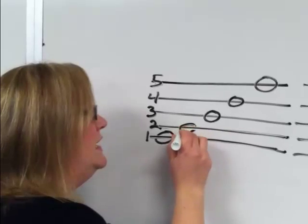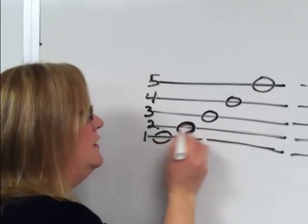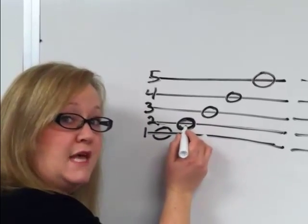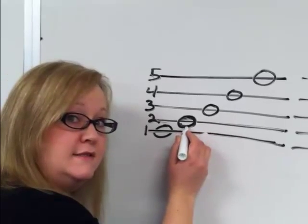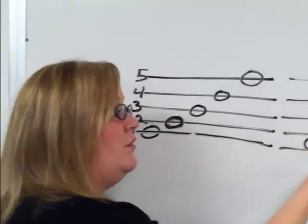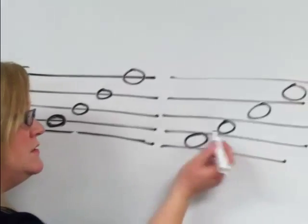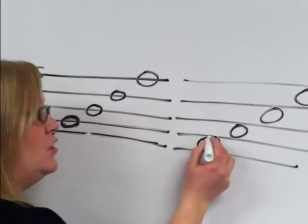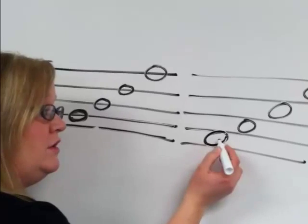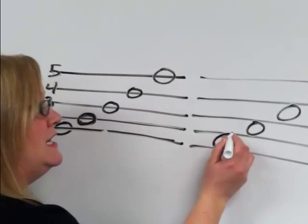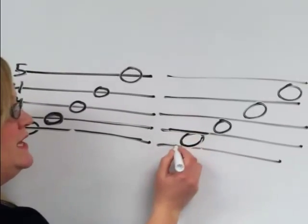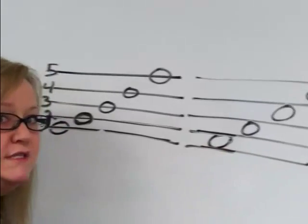So line two, right here, is going through the center of this note. That makes this a line note on line two. Over here, we have space notes because there is no line going through the center of the note or the tummy of the note. Instead, it's sandwiched in between two lines. So we call these spaces.